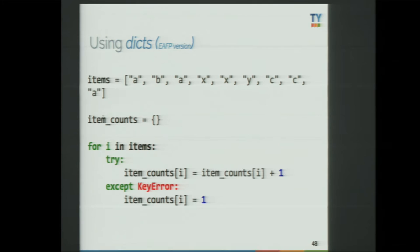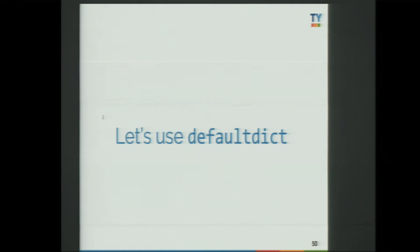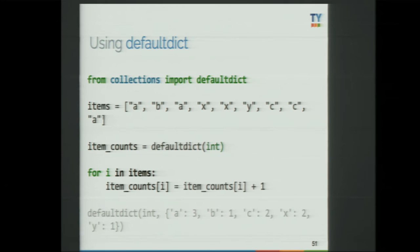Let's start with the basic thing: counting. Counting is like the basic building block for many statistical algorithms — from simple frequency counts to Naive Bayes, they are based on counting. I don't think data scientists know how to count properly in Python. How do you count? First attempt: you use dictionaries. The more Pythonic way is to use try/except — asking for forgiveness rather than permission. But we can do better. Let's use collections.defaultdict. You pass a default value or default generation function — in this case, an integer that defaults to zero — so you don't have to do any check.